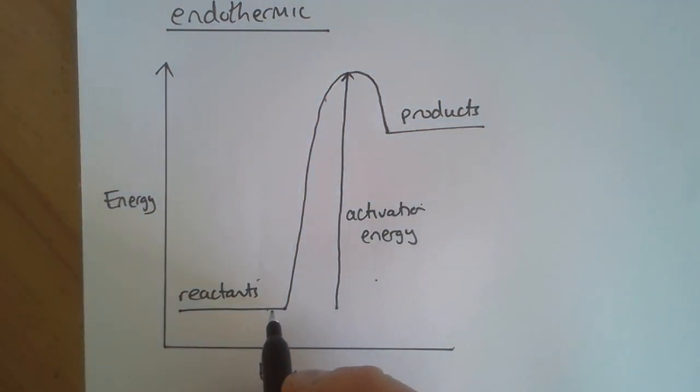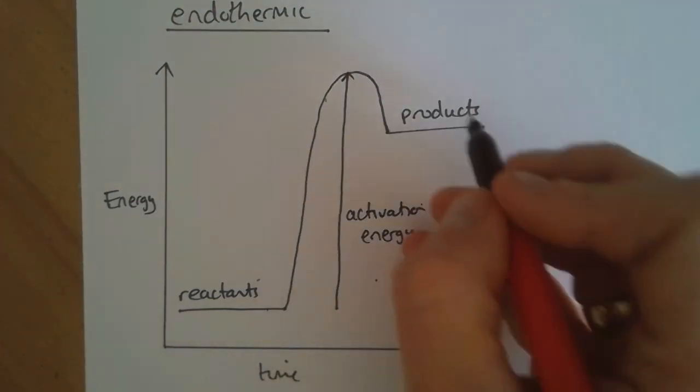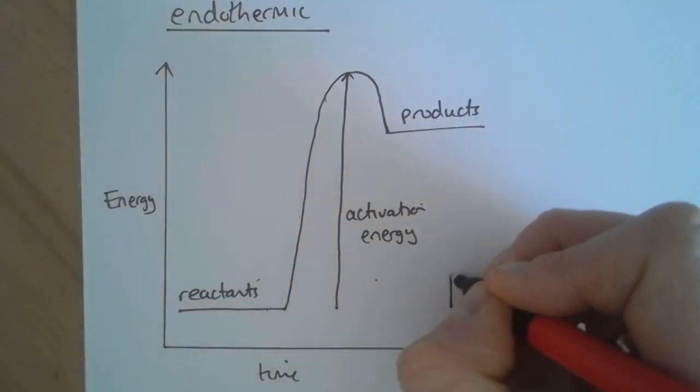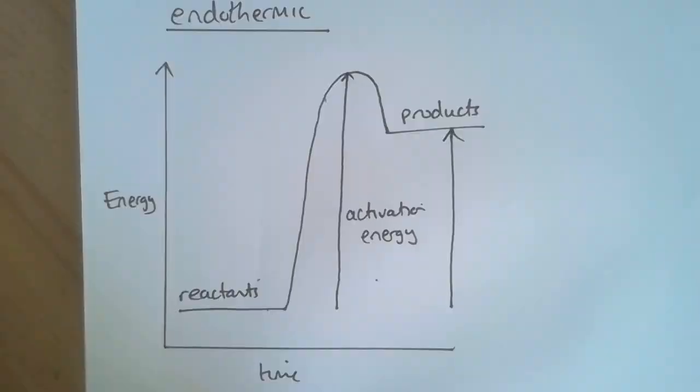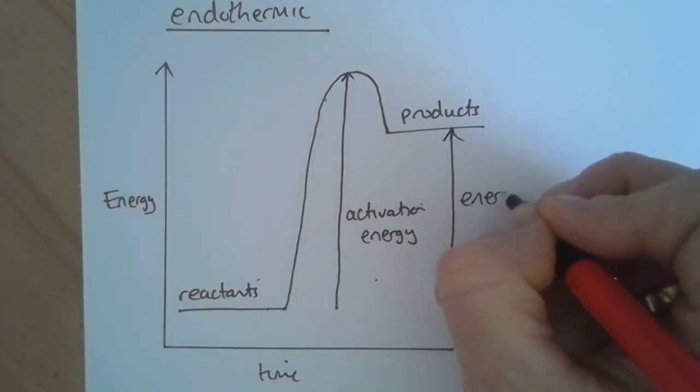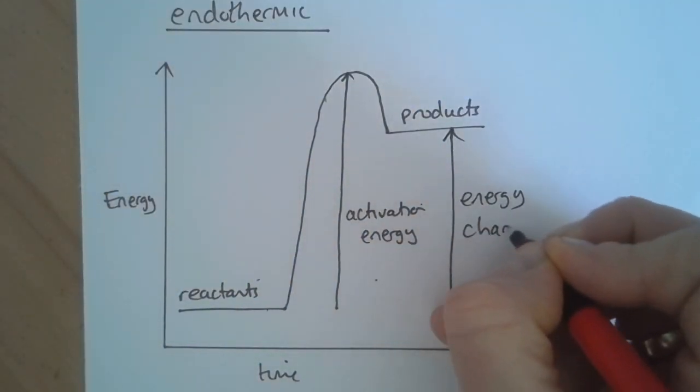And then the other line goes from the reactants to the products. So in line with the reactant line and up to and touching the product line. And this is the energy change for this reaction.